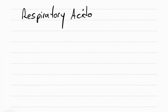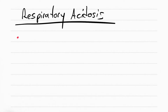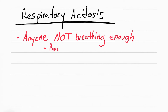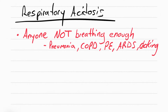The first acid-base imbalance we're going to talk about is respiratory acidosis. Think about what happens when someone doesn't breathe — what happens to the CO2? Are they blowing it out or keeping it in? They're keeping all their CO2 in, and since CO2 is acidic, they're getting more acidic. Patients who get respiratory acidosis include those with pneumonia, COPD, pulmonary embolisms, acute respiratory distress syndrome, and patients who are choking.